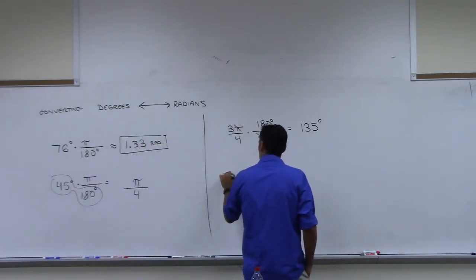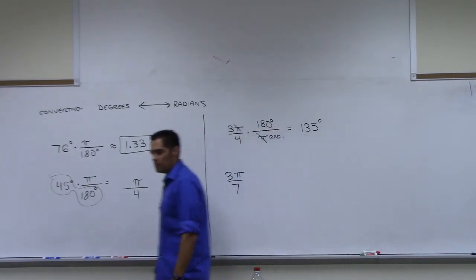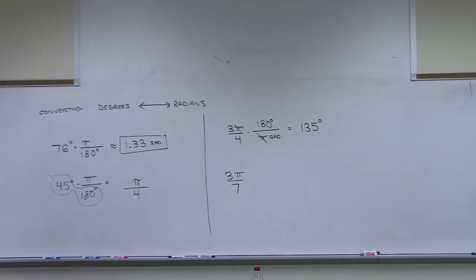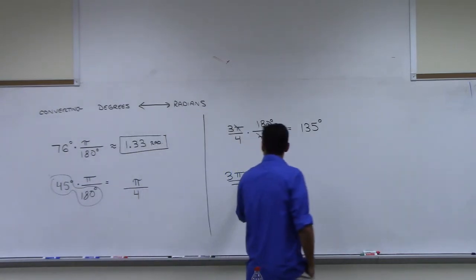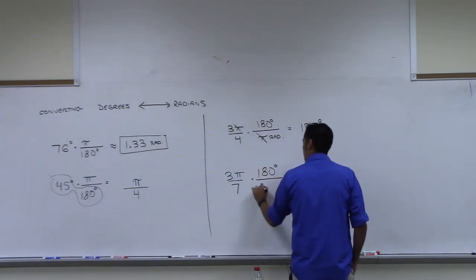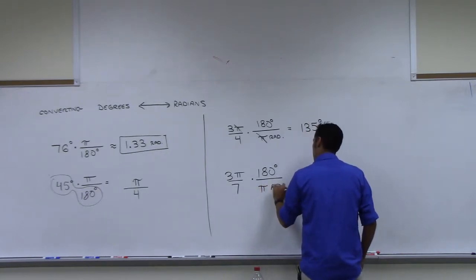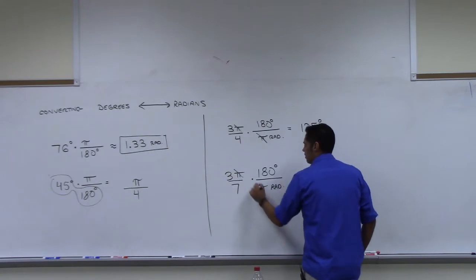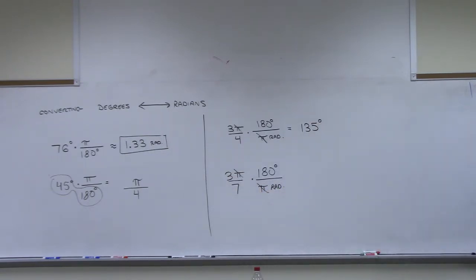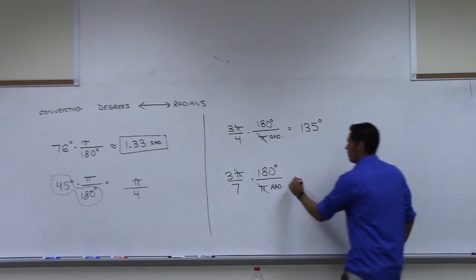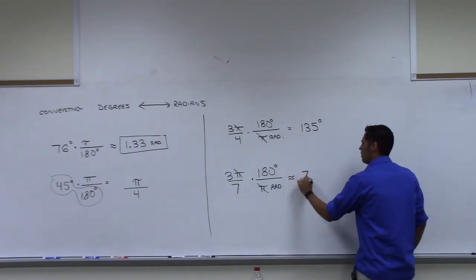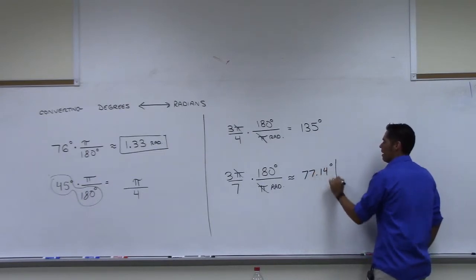Now, one that's not so common, 3 pi over 7. That's not one of your common angles. But about how many degrees is that? So you hit this with 180 degrees over pi radians. And the pi's cancel. And I think you'll get a decimal here. Somebody? Anybody? 77.14 degrees. Okay, good.